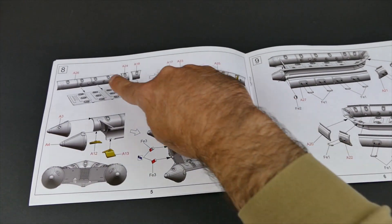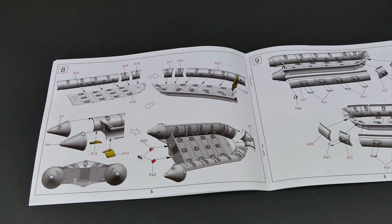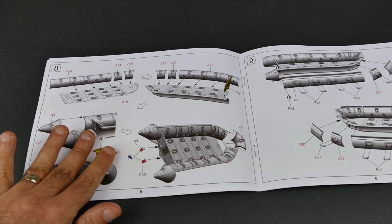This is the dinghy itself. So how to put that together. Again, some photo etch bending.